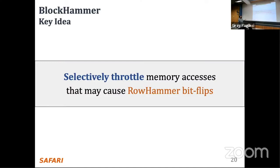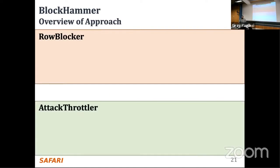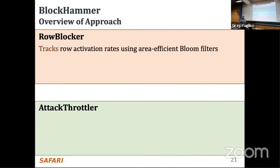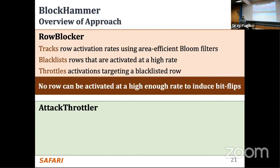BlockHammer's key idea is to selectively throttle memory accesses that may cause Rowhammer bitflips. BlockHammer consists of two mechanisms: Row Blocker and Attack Throttler. Row Blocker tracks row activation rates using area-efficient bloom filters, blacklists rows that are activated at a high rate, and throttles or enforces a certain delay between activations targeting a blacklisted row. By doing so, Row Blocker ensures that no row can be activated at a high enough rate to induce Rowhammer bitflips.